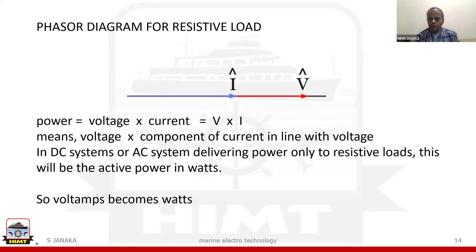In AC systems we have got three types of loads. In DC we have got only one type of load, called a resistive load. Power is V into I, expressed in watts or kilowatts.